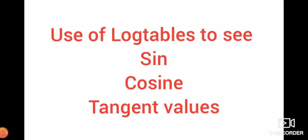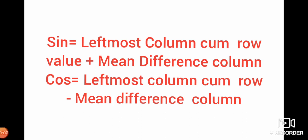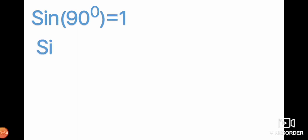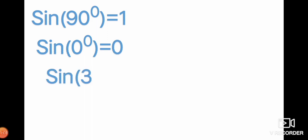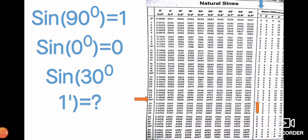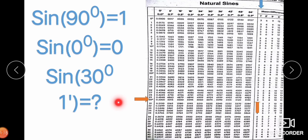How to see sine, cosine, and tangent values in the log table. Sine 90° = 1, sine 0° = 0, sine 30° = 0.5. But what is sine 30° 1 minute using the log table? This natural sine table consists of degree values on the extreme left, decimal degree values, and minute columns. To find sine 30° 1', we locate the row of 30°.